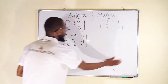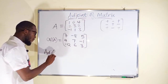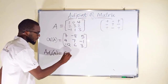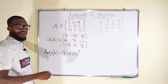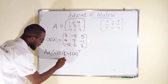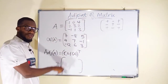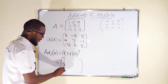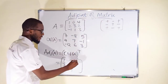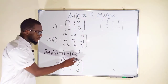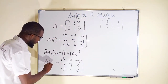Now we find the transpose of the cofactor matrix, which gives us the adjoint of our original matrix. We take the first row of cofactors and transform it into the first column: 7, −8, 5. The second row becomes the second column: 4, 7, −1. The third row becomes the third column: −12, 6, 3. This transpose of the cofactors is the adjoint of matrix A.